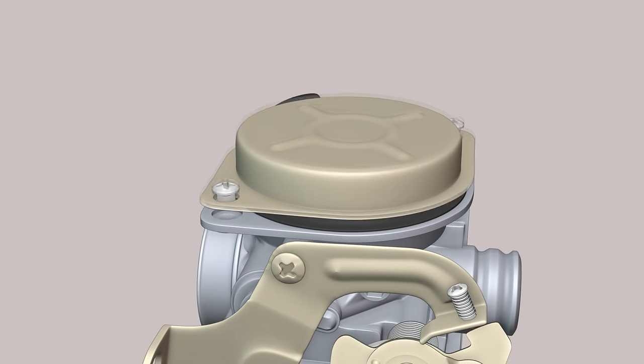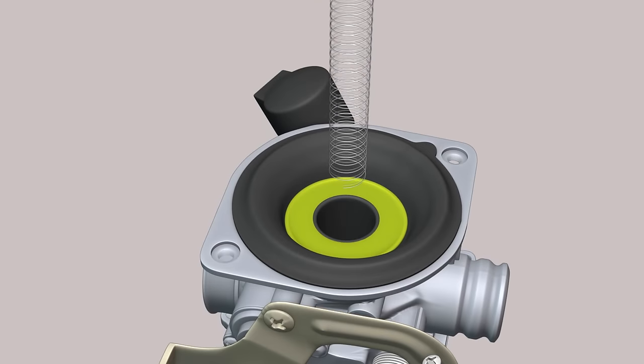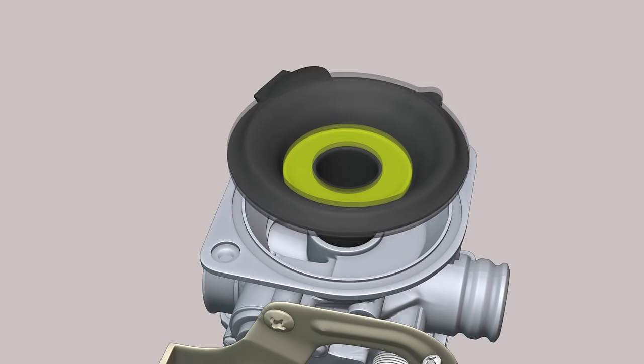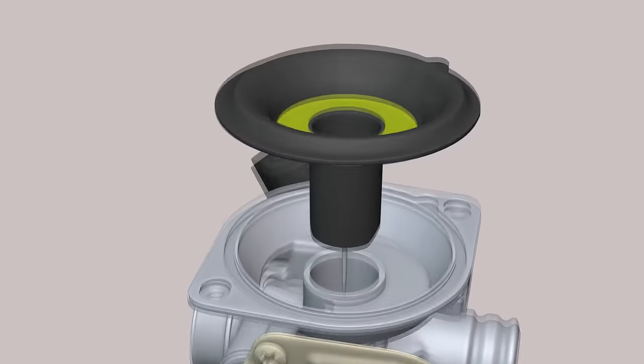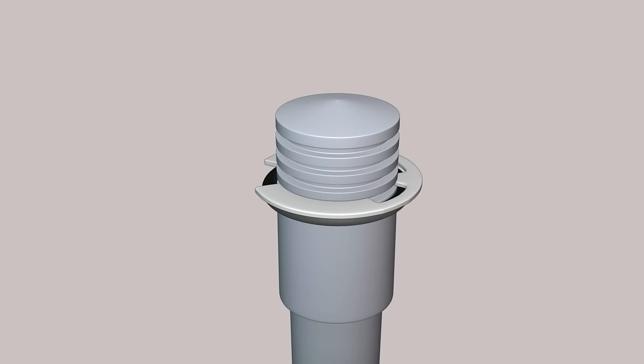Under the top cover is the diaphragm chamber where the spring is located. A piston with a diaphragm, also called a spool. Dispensing fuel needle. Rubber ring. Stop washer.